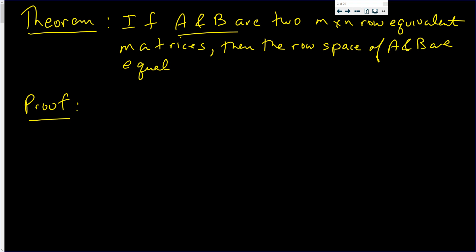In this video we're going to show that if A and B are two row equivalent matrices, then the row space of A and B are equal.